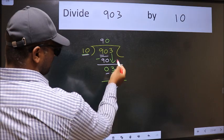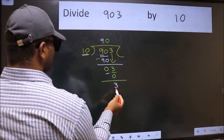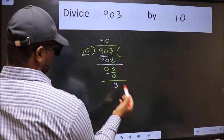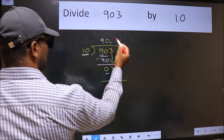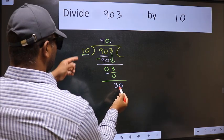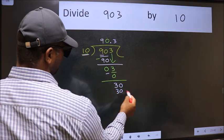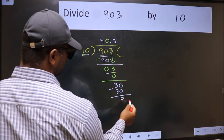Over here, we did not bring any number down. And 3 is smaller than 10. So now we can put dot and take 0. So 30. When do we get 30 in 10 table? 10, 3 is 30. Now we should subtract. We get 0.